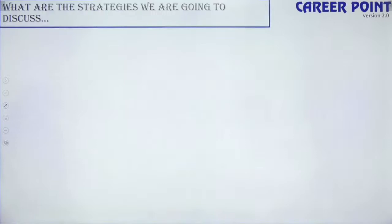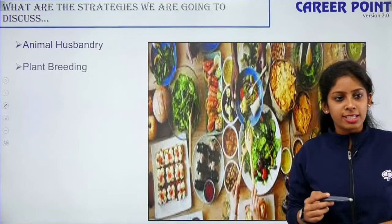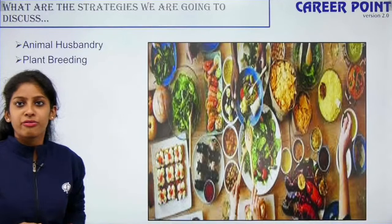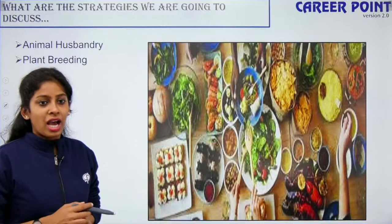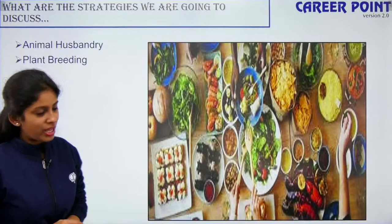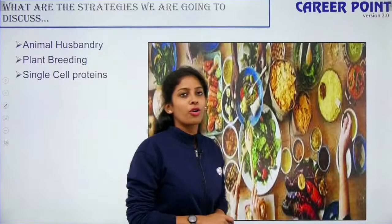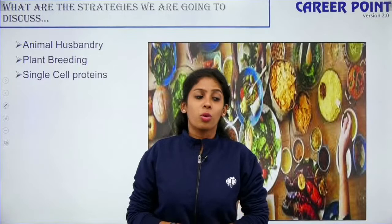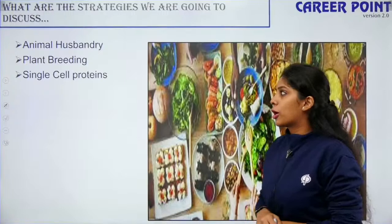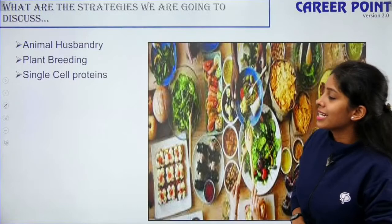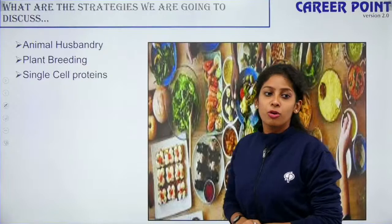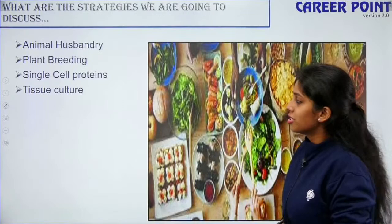One of the topics we discussed in this chapter — the first topic was animal husbandry, which is the care for livestock. We spoke about dairy farming, poultry, beekeeping (apiculture), and fisheries. Then we spoke about plant breeding — inbreeding, outbreeding, controlled experimental methods, conventional plant breeding, mutational breeding, plant resistance to diseases and pests, single cell proteins, and finally tissue culture.